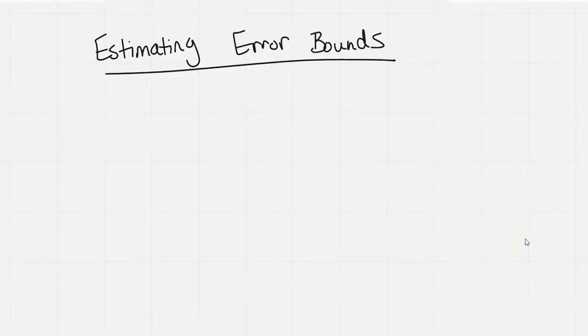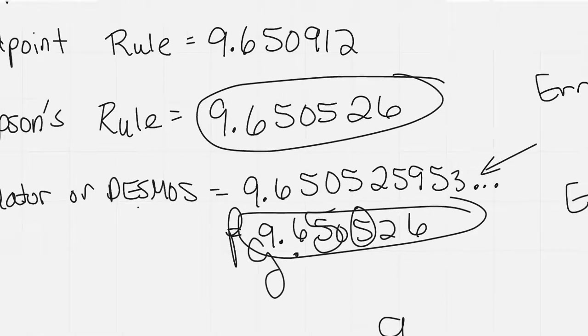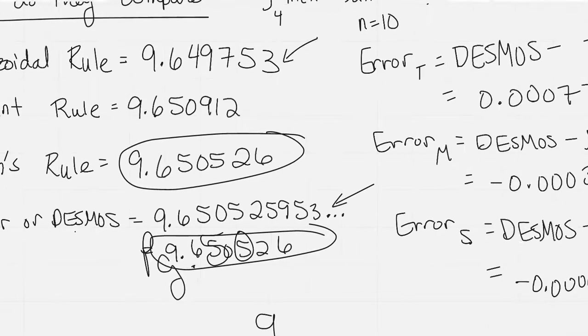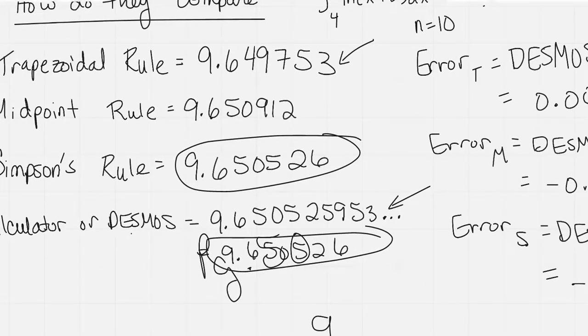So at some point, you're going to have to estimate your error bounds. In an earlier video, we looked at the values we got with n equals 10 for trapezoid rule, midpoint rule, and Simpson's rule.